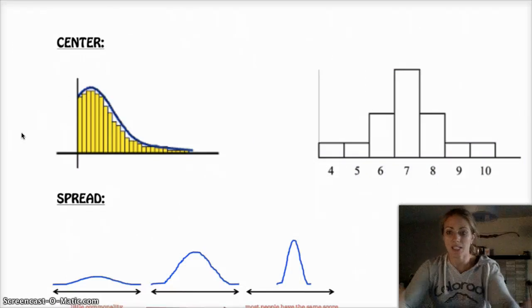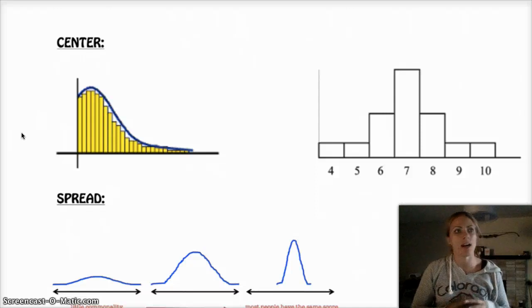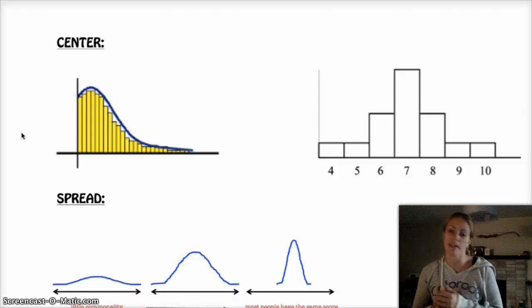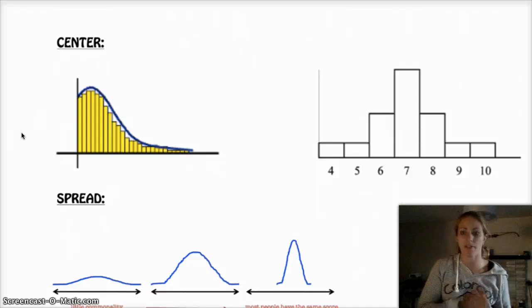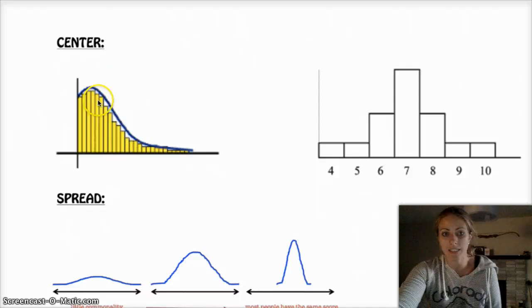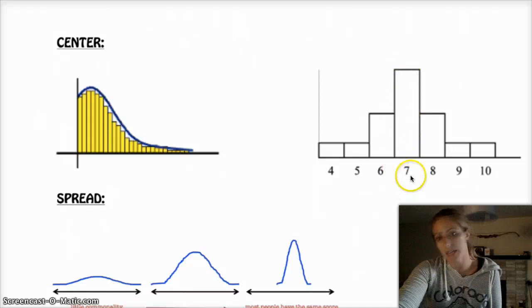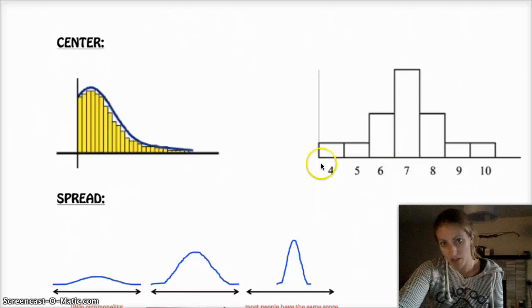Moving on to C, the center of the data. There are a couple different ways to measure center. The two most common are the mean and the median. Mean is when you add up all values and divide by how many there are. Median is the exact middle value with half the data above and half below. With perfectly symmetric data, the mean and median are smack dab in the middle - they're the same value.